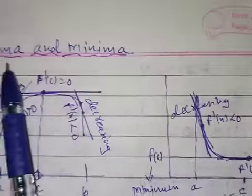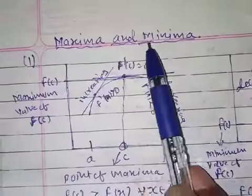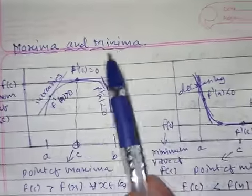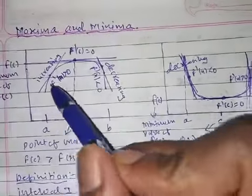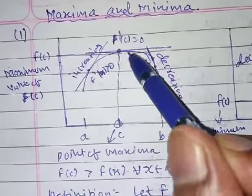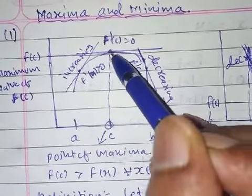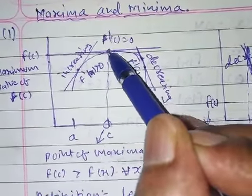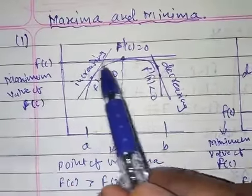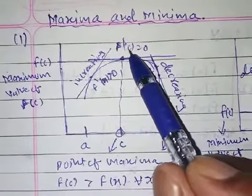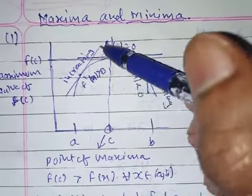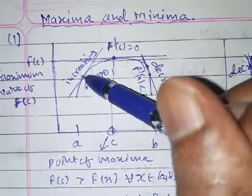Let's start with a new topic: maxima and minima. Suppose you draw a curve like this. Taking a point c, the tangent is parallel to the x-axis, so f'(c) will be equal to 0.